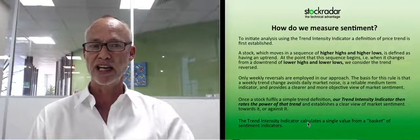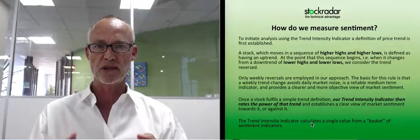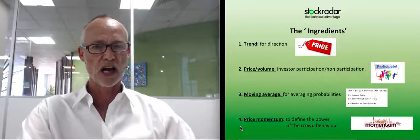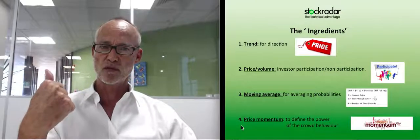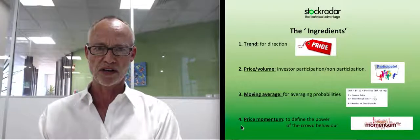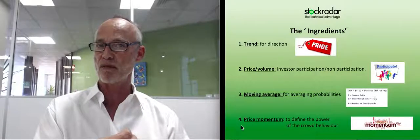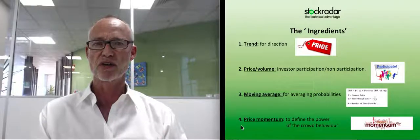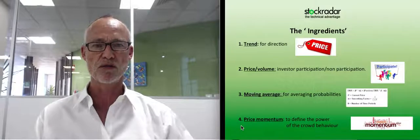The Trend Intensity Indicator calculates a single value from a basket of sentiment indicators. Firstly, trend for direction. Second, price volume for participation or non-participation by investors. Thirdly, moving average to work on averaging probabilities. And fourth, price momentum to define the power of crowd behavior, which is a very, very powerful force these days.